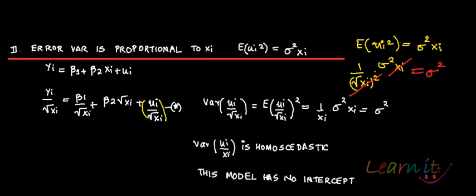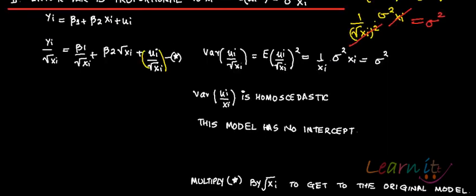Note that this new model has no intercept — it is just beta 1 over root xi plus beta 2 times root xi. To get back to the original model, you multiply by root xi.